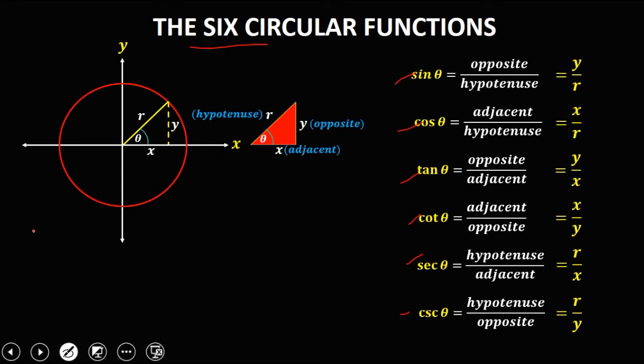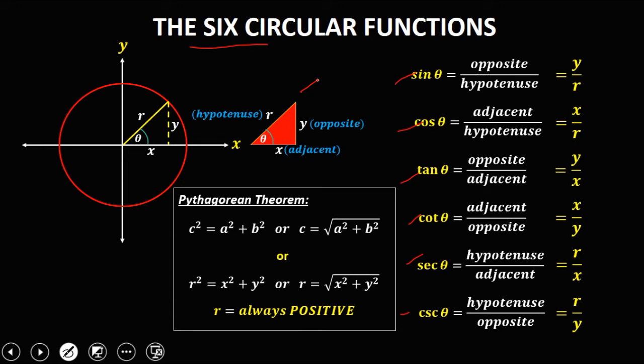Now, since this triangle is a right triangle, to solve for the unknown side or the missing side, we're going to use the Pythagorean theorem: c squared equals a squared plus b squared. Since our variables are x, y, and r, we're going to use the formula r squared equals x squared plus y squared. Then r is always positive because r is the hypotenuse.